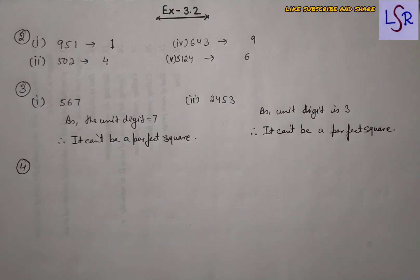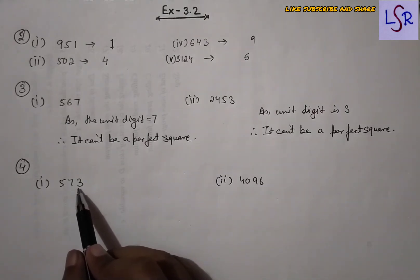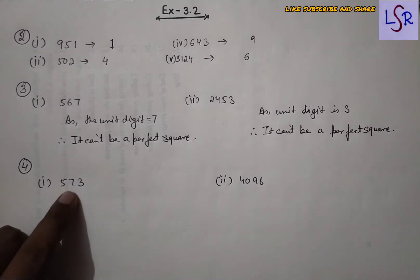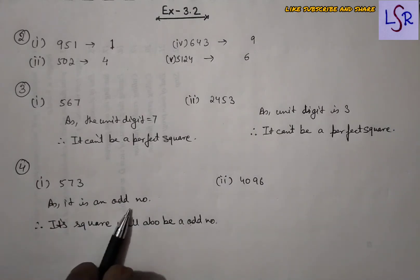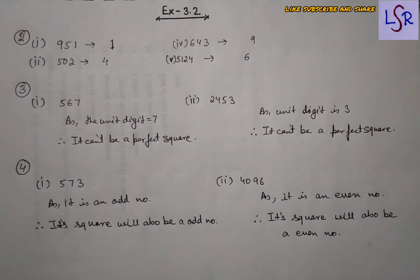Question 4: determine which of the following numbers would have an odd or even square, and give the reason. The first number has 3 at the last, so as it is an odd number its square will also be odd. Similarly, as the second number is even, its square will also be even.